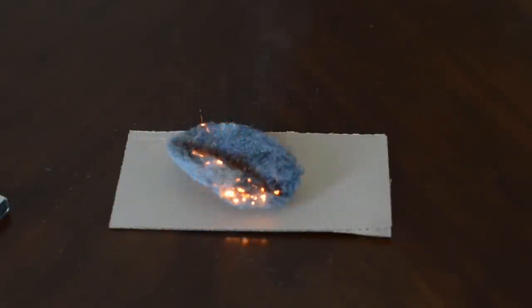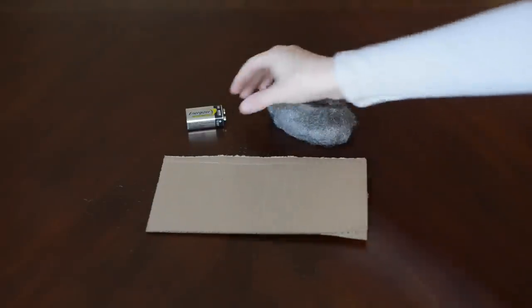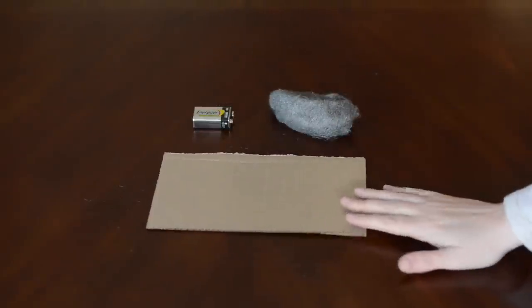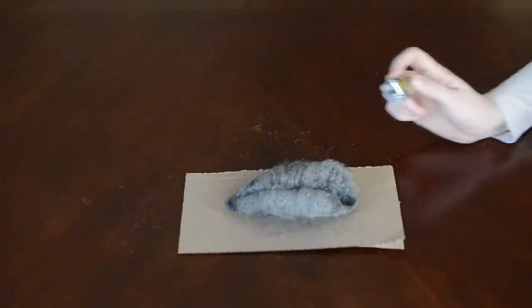Do not do this without your parents' supervision. Safety is very important. What you're going to need is a nine volt battery and some steel wool. We're using a piece of cardboard just to protect our table.